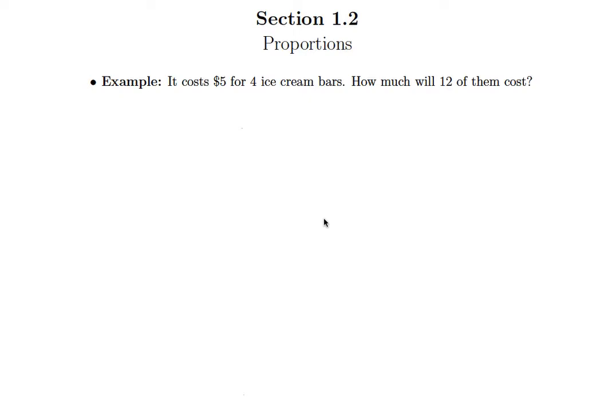Of course here we're assuming that the price per ice cream bar remains the same as the number purchased goes up. So, like in the last one, we have this five dollars and four ice cream bars that really go together, right? Five dollars, four bars.